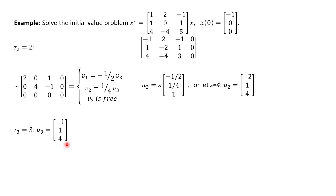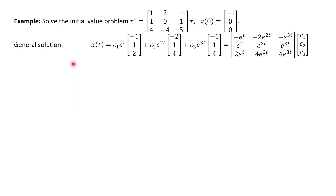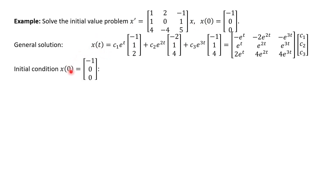We found our three eigenvectors corresponding to our three eigenvalues. Since we had three distinct eigenvalues, these vectors are all linearly independent by our theorem. So now we're ready for our general solution: x equals c1·e^t·(−1, 1, 2) plus c2·e^(2t)·(−2, 1, 4) plus c3·e^(3t)·(−1, 1, 4). This can also be written as a matrix — whose columns are the eigenvectors — times the vector (c1, c2, c3). If we didn't have an initial condition, this would be our final answer.